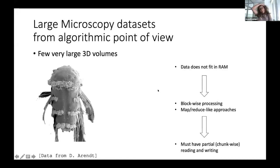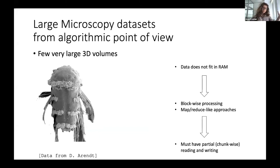What we like to work on is few, or just one, very large 3D volumes. And that is difficult because the data doesn't fit into RAM. We have to process block-wise, so you have to use some kind of MapReduce-like approaches — scatter-gather, whatever you want to call it — which also means that the data has to support partial or chunk-wise reading and writing. This is for us very, very important.